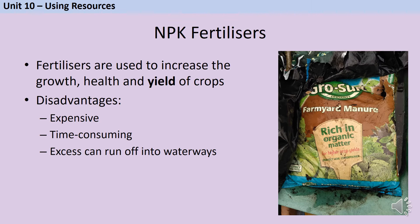When it rains, any excess fertiliser can run off into nearby rivers and lakes and cause a problem called eutrophication. There are probably already algae — tiny photosynthetic organisms — living in those rivers and lakes, and when they get a load of fertiliser they also grow really fast. Eventually they run out of nutrients and die, leading to rapid growth of bacteria which can deoxygenate the water. Not ideal — and it's also a waste of your money.